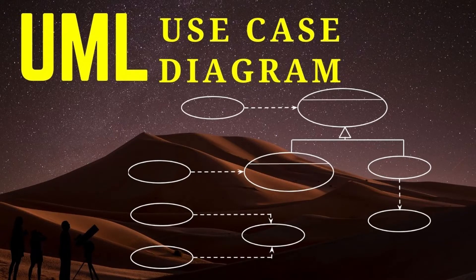Use case diagrams are fairly simple. They summarize some of the relationships between use cases, actors and systems, but they don't show the order in which steps to achieve the goals of each use case are taken.